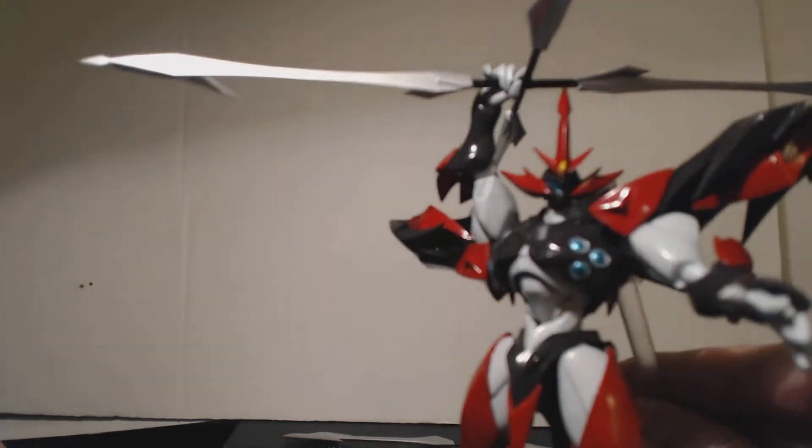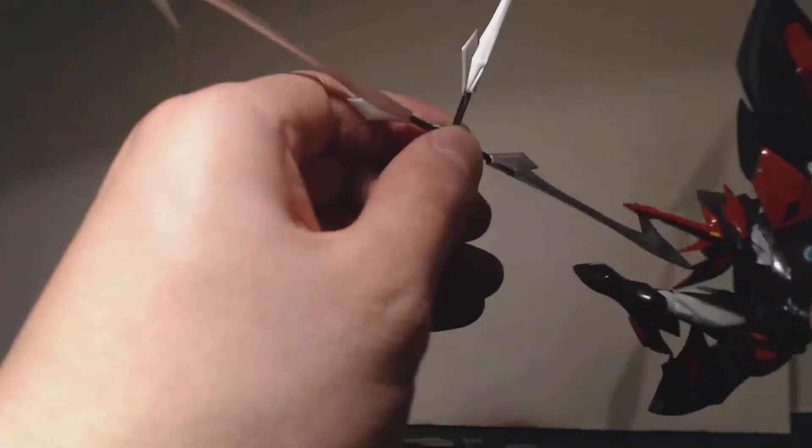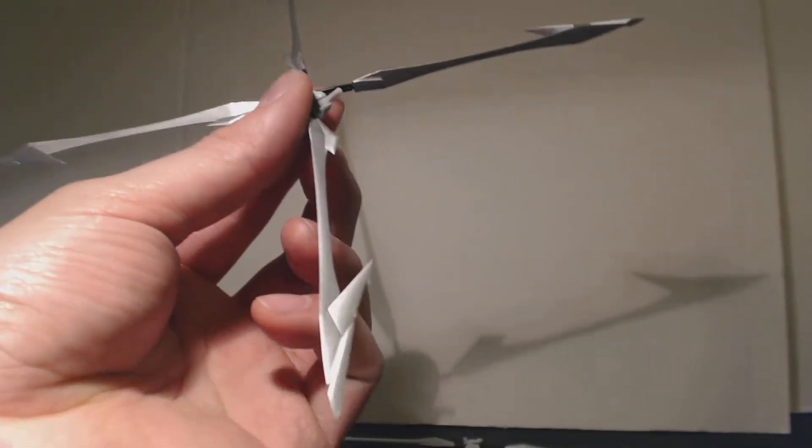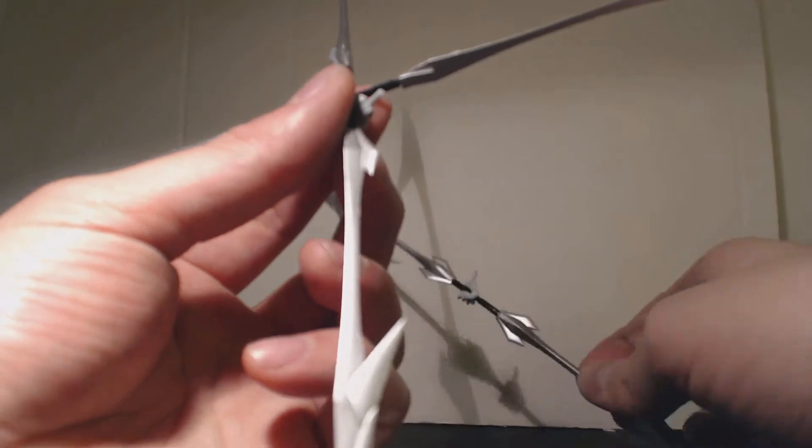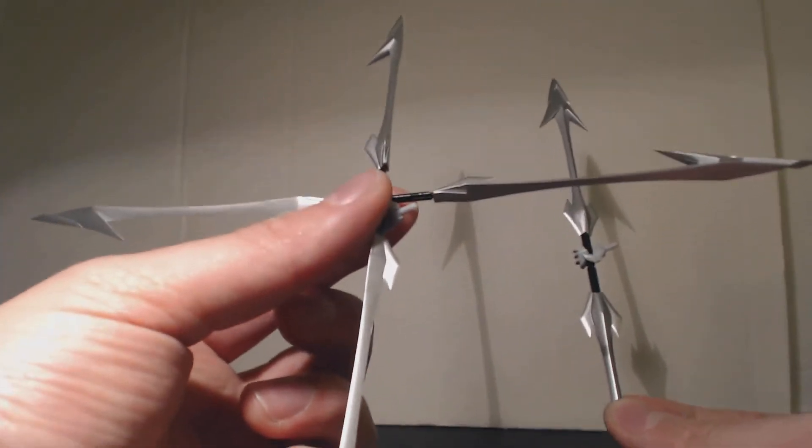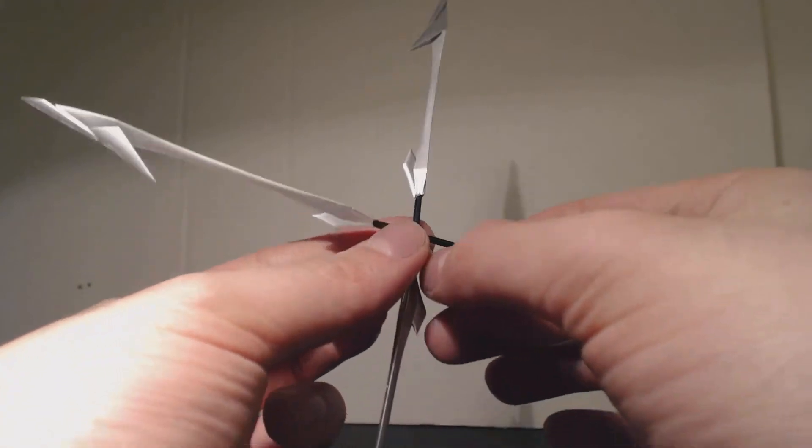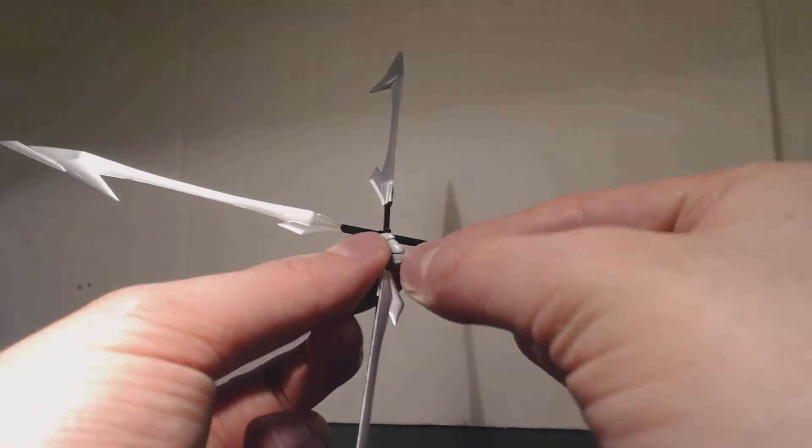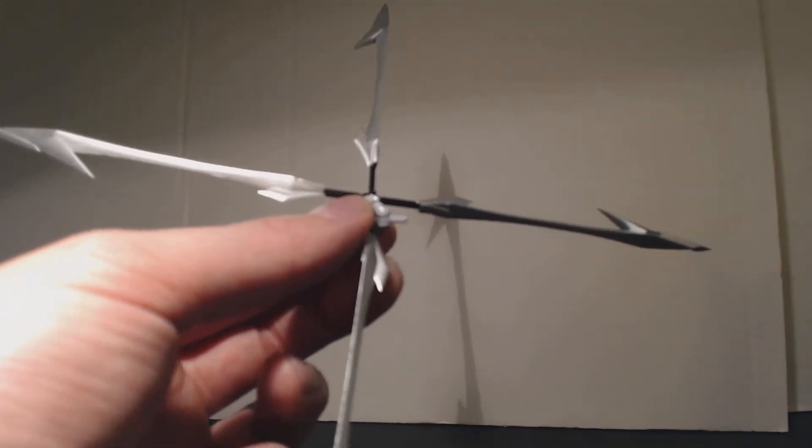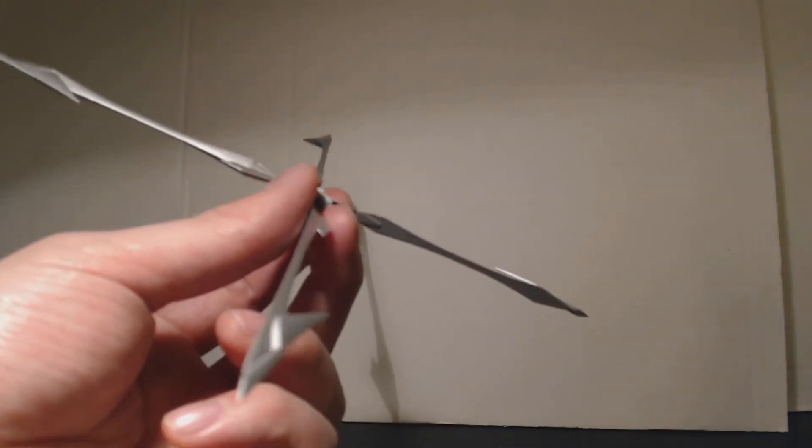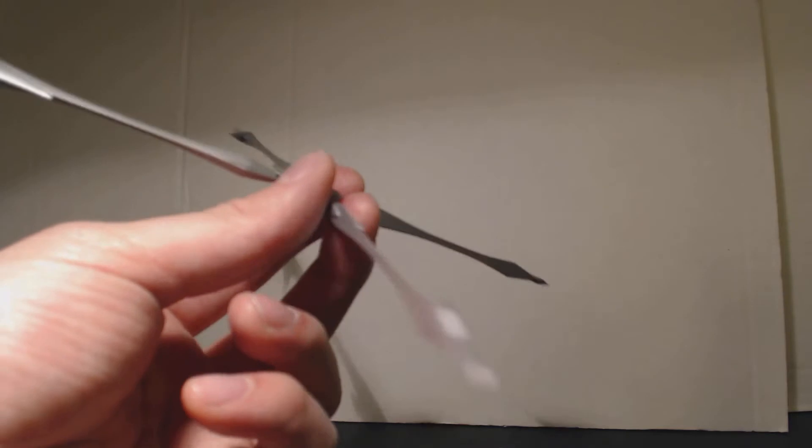So aside from that, Tekkaman Blade also came with the lance accessory. So this is pretty much the same as this lance. It's just that this is the form when the lance splits open. So in the TV series, the lance occasionally splits into a windmill-like formation, and Tekkaman Evo uses it to attack Blade.